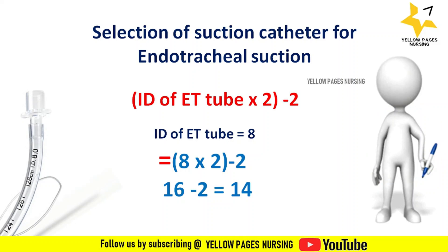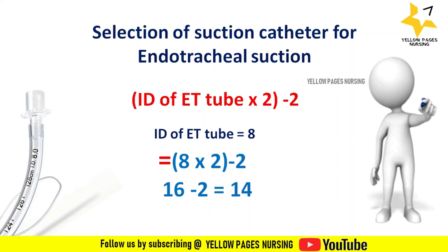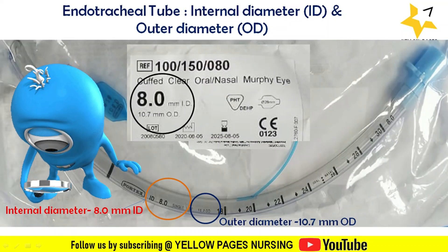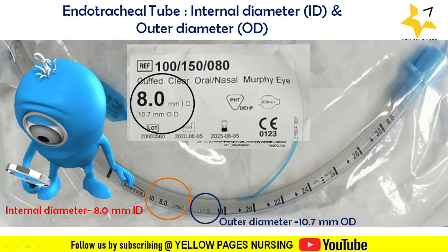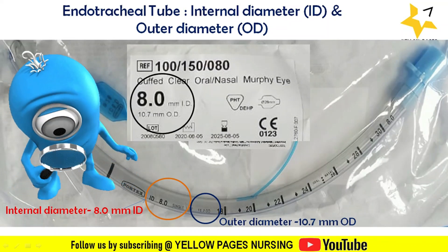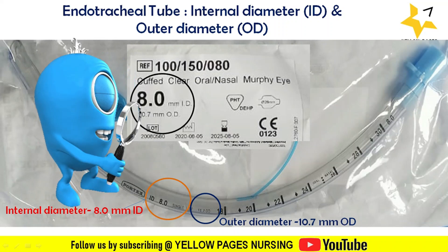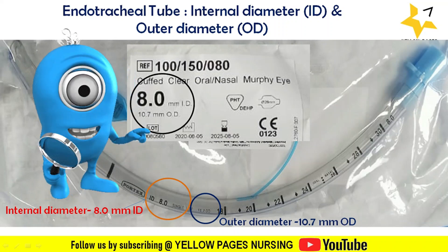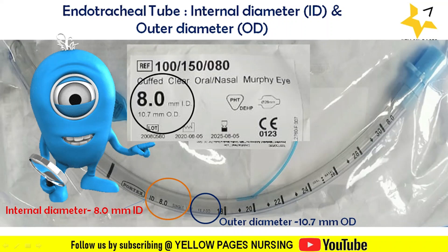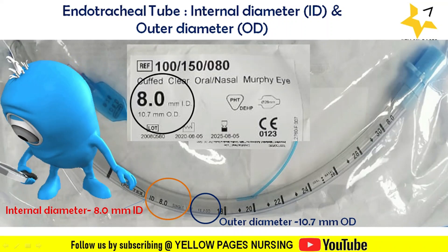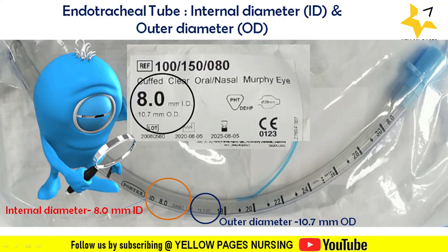These are the three formulas to calculate the appropriate size of suction catheter. You can use any one of them. As a preliminary step before suctioning, check the endotracheal tube size of the patient, calculate the appropriate suction catheter size using one of these formulas, and then arrange your articles accordingly.